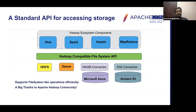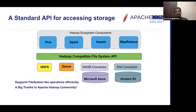This API mostly includes all the features that HDFS offers. Hadoop ecosystem components like Hive, Spark, Impala, and MapReduce can easily integrate with Hadoop compatible file system APIs without worrying about the underlying storage system. The underlying storage systems like Microsoft Azure and Amazon S3 can write their own connectors and convert the data to their own format. We have a basic Ozone file system implemented for Ozone, and big thanks to the Apache Hadoop community for the hard work.